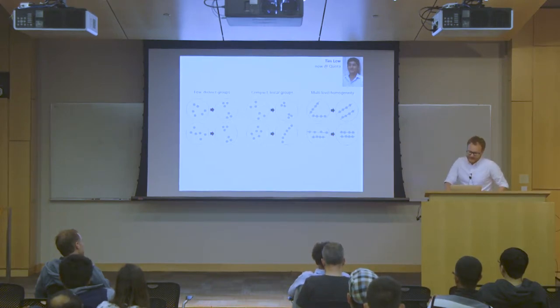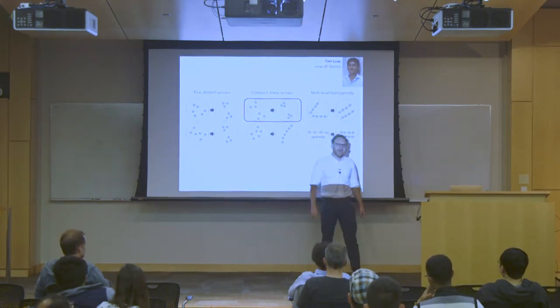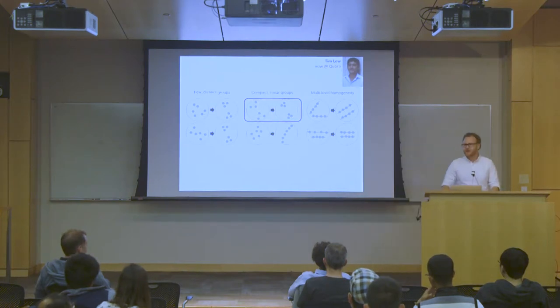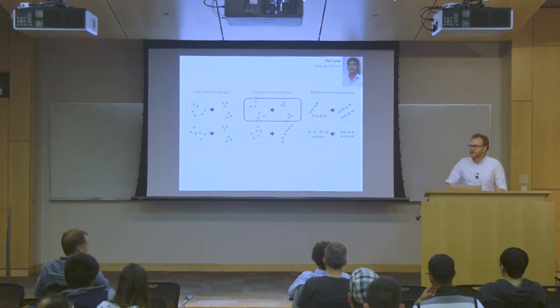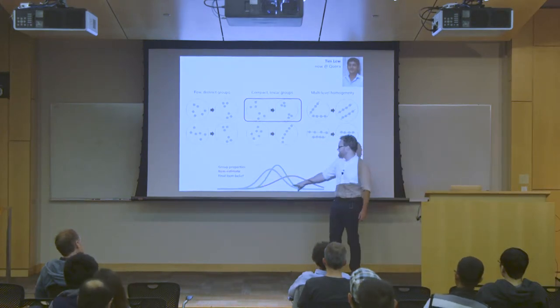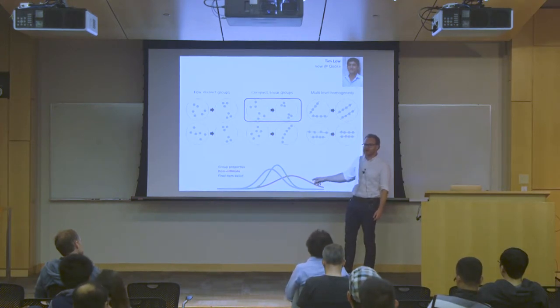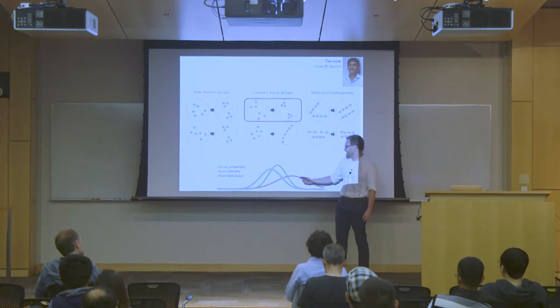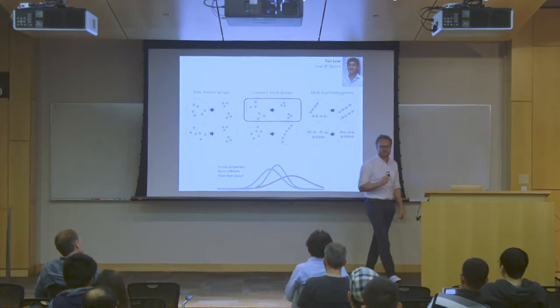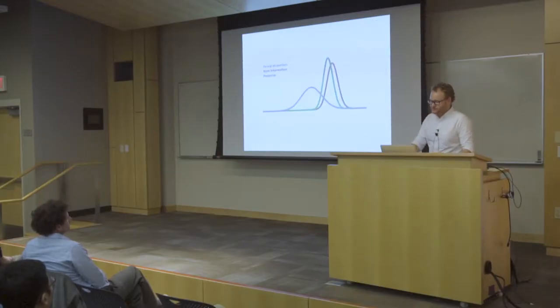But the general gist of it is we get things like we have preferences for a small number of distinct groups, for these groups to be compact, for them to be sort of homogenous across them. And this is work that Tim Liu did. But what I want to focus on just is this little bit here, that we have a preference for compact linear groups. And this is essentially a core essence of this kind of hierarchical probabilistic reasoning, which is that if we have some estimate of the group properties and we have some estimate for a noisy estimate for any given item, the posterior, what we should believe about that item given what we know about the group from which it came, should be shifted towards the group. Does that make sense? We're going to be drawn toward the group average. So we're going to be drawn toward the group average. This is going to have a bunch of ramifications.